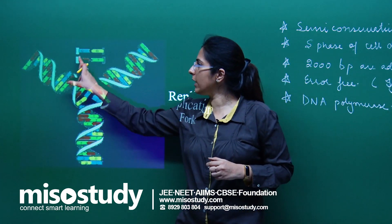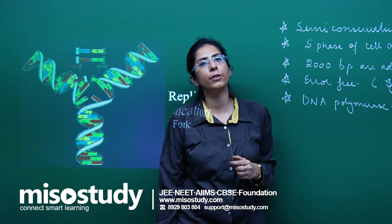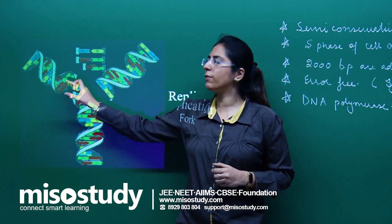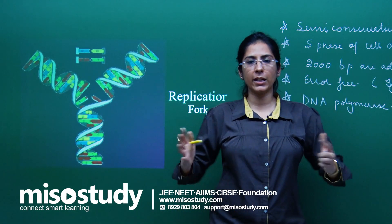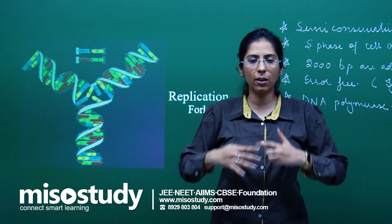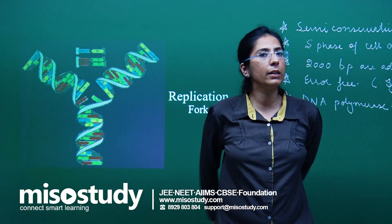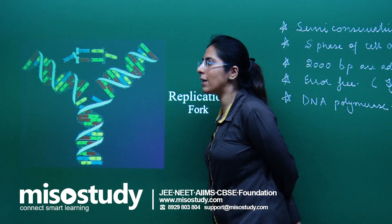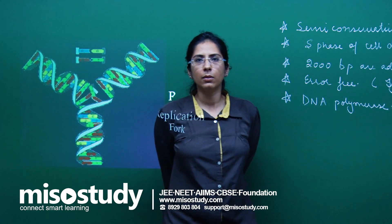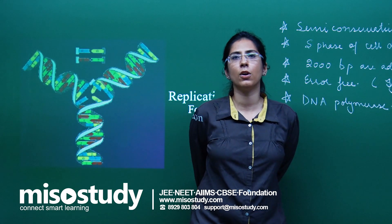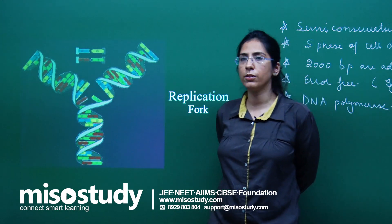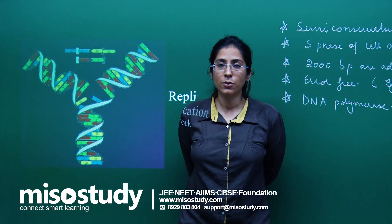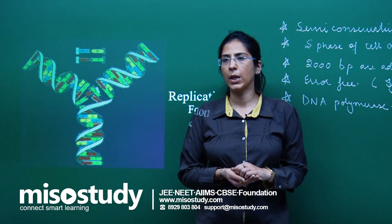From one strand, two different strands are formed. When we talk about the origin of replication, keep in mind that in the case of prokaryotes, there is always a single place at which the origin of replication occurs, called the ORI sequence — similar to the plasmid ORI discussed in the biotechnology chapter.